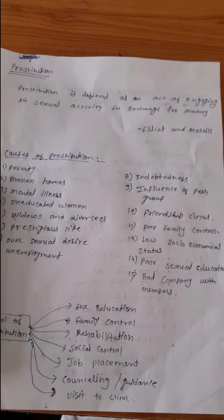The causes of prostitution — the first one is poverty. Poverty is a big problem in India. Due to poverty, prostitution happens, meaning women exchange themselves for money. Due to poverty, prostitution may be increasing. Next is broken homes — due to disturbance of family functions, some people turn to prostitution for money.